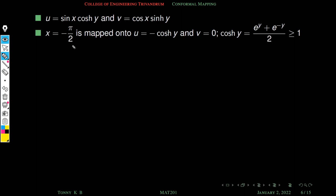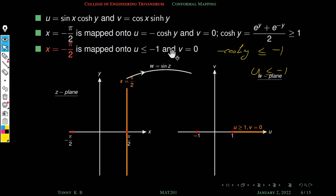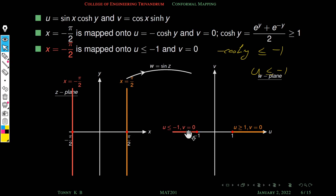For x equal to minus π/2: u equals sin(−π/2)·cosh(y) equals −cosh(y), and v equals 0. Since cosh(y) ≥ 1, we have −cosh(y) ≤ −1, so u ≤ −1 and v equal to 0. Thus x equal to −π/2 maps to the portion of the real axis with u ≤ −1. This is the infinite line segment on the real axis extending to the left from minus 1.